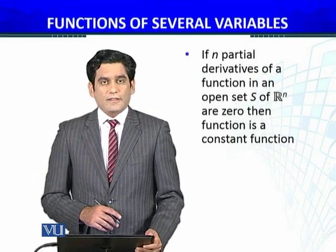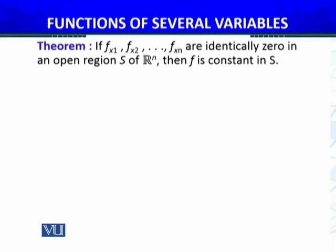The theorem says that partial derivative of f with respect to x₁, x₂ up to xₙ... it means f is a function from ℝⁿ to ℝ or some subset of ℝⁿ. If each partial derivative equals zero, identically zero, for all x belongs to S, and S is some subset of ℝⁿ, then f must be a constant function.